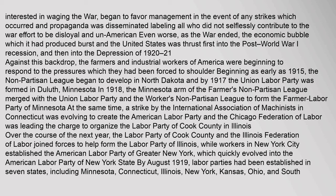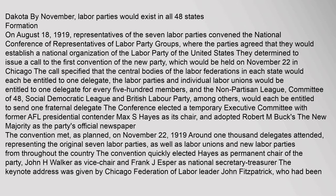By August 1919, labor parties had been established in seven states, including Minnesota, Connecticut, Illinois, New York, Kansas, Ohio, and South Dakota. By November, labor parties would exist in all 48 states. On August 18, 1919, representatives of the seven labor parties convened the National Conference of Representatives of Labor Party Groups, where the parties agreed to establish a national organization — the Labor Party of the United States. They determined to issue a call to the first convention of the new party, which would be held on November 22 in Chicago.